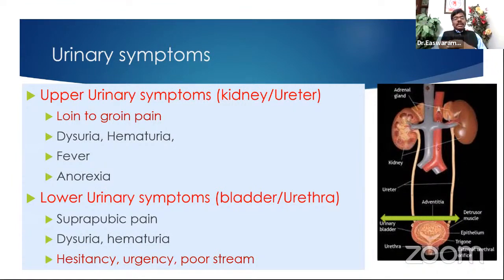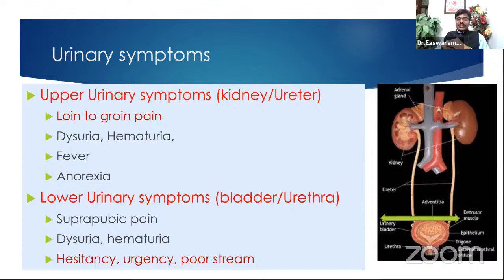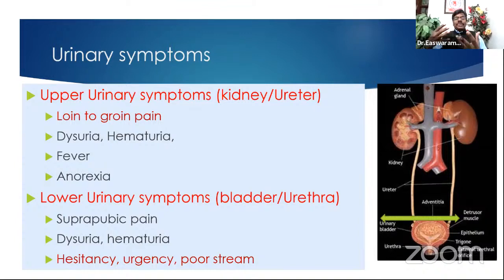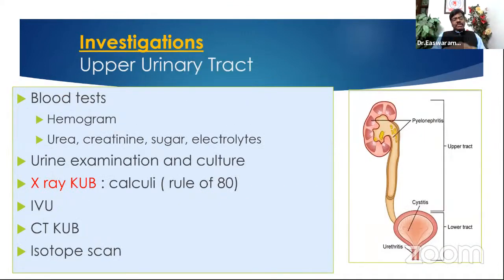If the patient is a layman you address it differently; if they're computer literate they may have already read the symptoms and say 'I have hesitancy' or mention nocturia. Nocturia means getting up at night to urinate — most of us don't because our bladder capacity is good. But nocturia more than twice per night is abnormal — it disturbs sleep and is usually a sign of some pathology inside the bladder or bladder outlet.